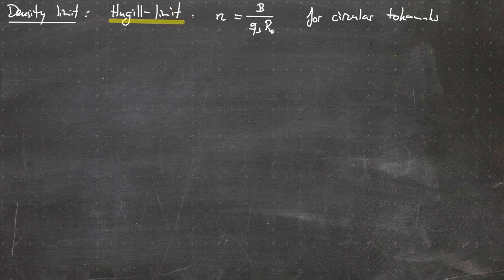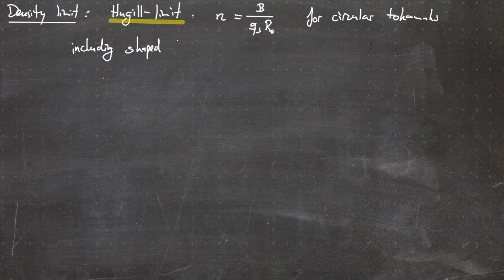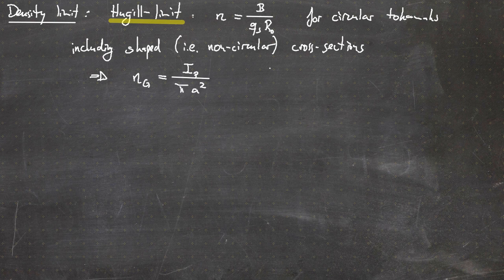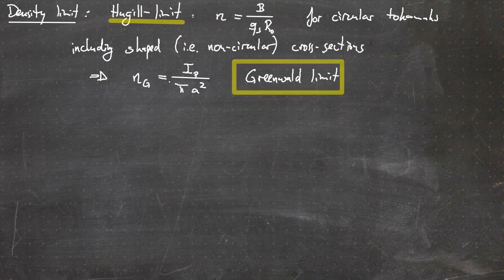If we include shaped — that is, non-circular — cross sections, we get a different limit: the Greenwald limit n_G, which is I_p over pi times a squared, where I_p is the plasma current and a is the minor radius. This is an important limitation for tokamaks.